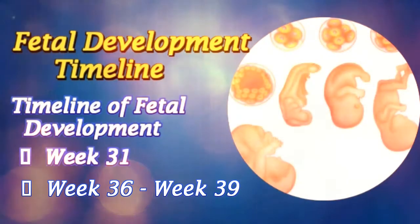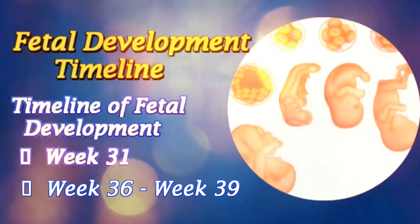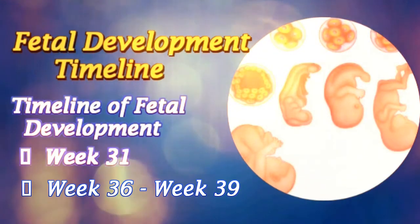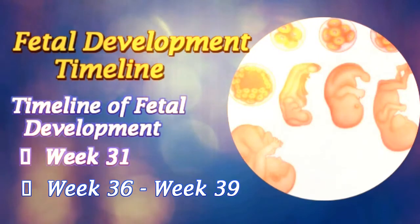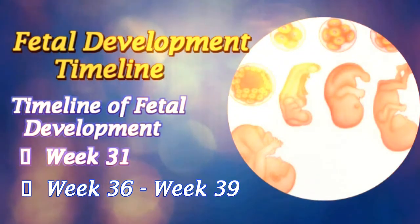Weeks 36 to 39: The fetus is considered to be full term by the end of the 37th week. It may be 48 to 53 cm in length. Head hair is now coarse and thick. This stage eventually transcends into child development stages after the birth of the baby. The size of the brain continues to grow without multiplication of neurons, as the brain and lungs are the last organs to develop completely. It is extremely important for an expectant mother to be knowledgeable of this fetal development timeline, as this is the main stage at which she needs to be extra careful so as to ensure proper development of her baby's body and organs.